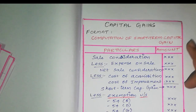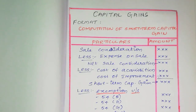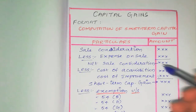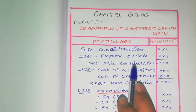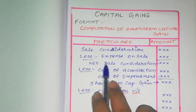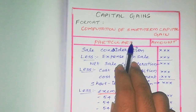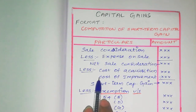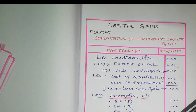This is the format for short term capital gains. First, Sale Consideration — if you sell an asset, that is the Sale Consideration. Less expenses on sale: any expenses related to the sale can be deducted from the Sale Consideration. The remaining amount will be Net Sale Consideration. For short term capital gains, we then deduct the Cost of Acquisition and Cost of Improvement.